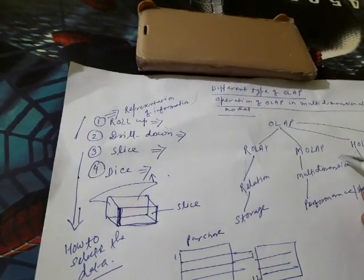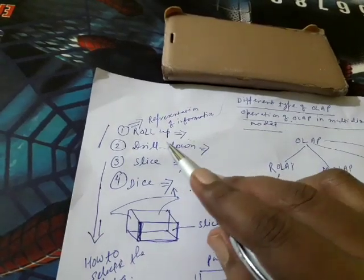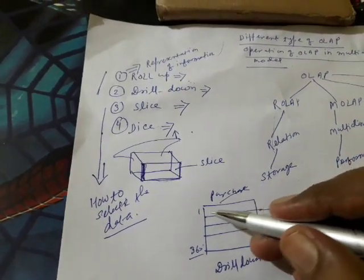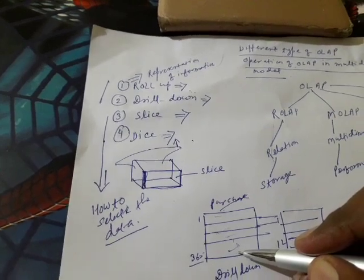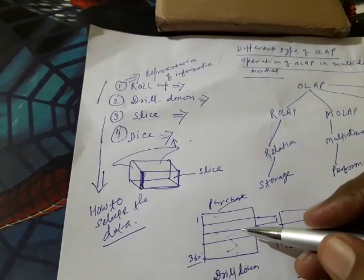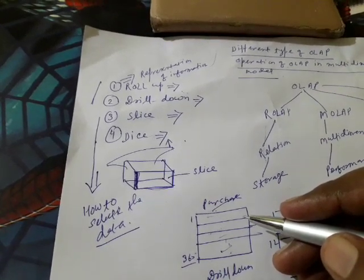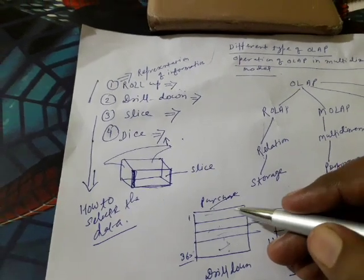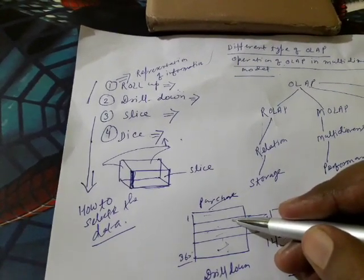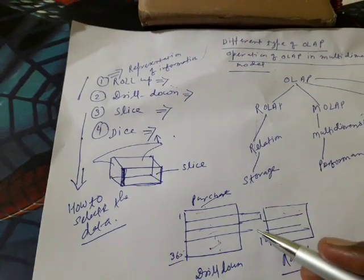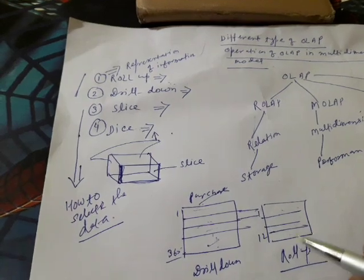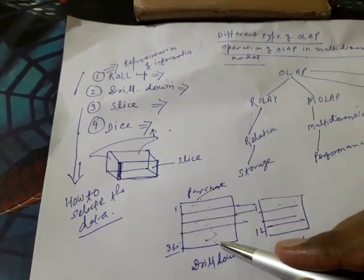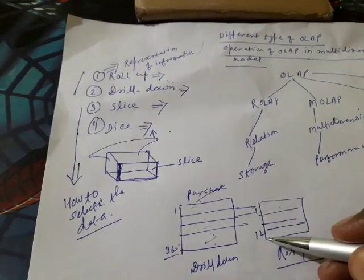First, let's discuss the meaning of the roll-up operation. Suppose data is stored as purchase information for 1 to 365 days — first day, second day, third day, up to day 365. If a company wants to know their purchases month-wise, we combine that data and summarize it: month one covers 30 days, then month two, month three, up to month twelve. So data from 1 to 365 rows is summarized into 1 to 12 rows.